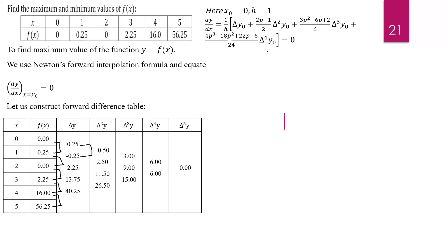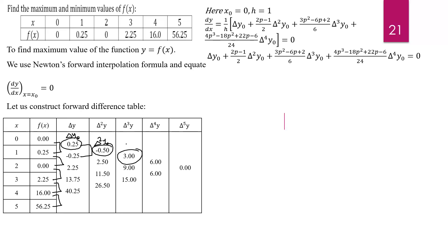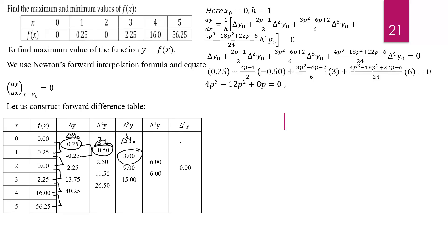Using the Newton forward interpolation formula, we differentiate to get the first order derivative term and equate it to 0. Substituting the values of del y₀ (first order), del² y₀ (second order), and del³ y₀ (third order) and solving for p, we get a cubic polynomial with three roots. Since 4p is a common factor, we get p = 0, and then p² − 3p + 2 = 0, giving p = 1 and p = 2. So the three critical points are p = 0, p = 1, and p = 2.